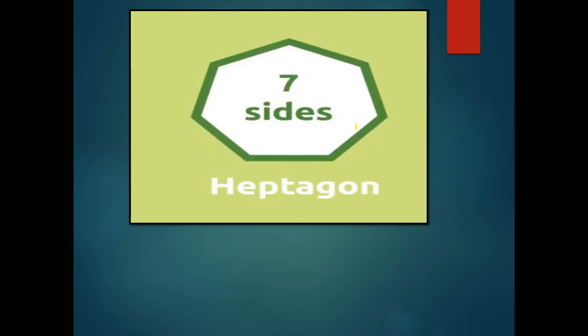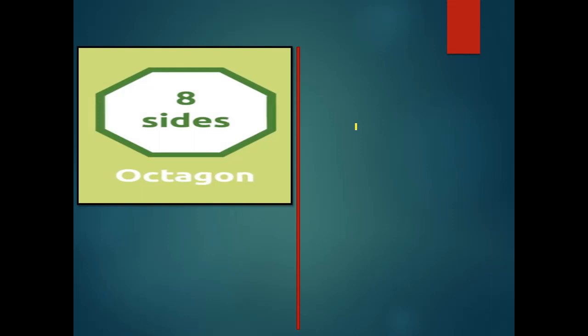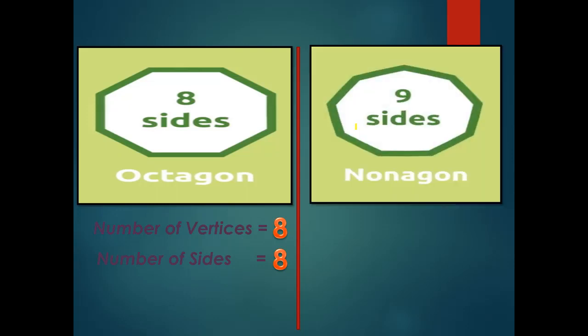If the polygon has eight sides, we call it an octagon — eight sides and eight vertices. And if the polygon has nine sides, we call it a nonagon — nine sides and nine vertices.